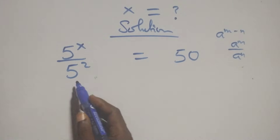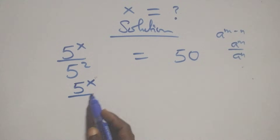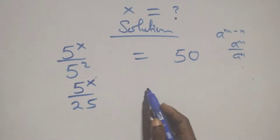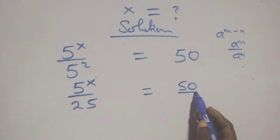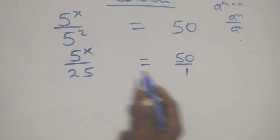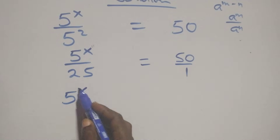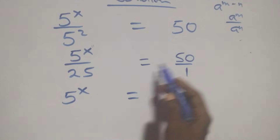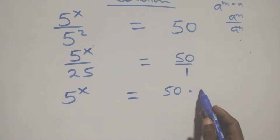This is the same as 5 raised to power x over 5 squared, where 5 times 5 is 25. We cross multiply: 5 raised to power x times 1 is the same as 5 raised to power x, which equals 50 times 25.